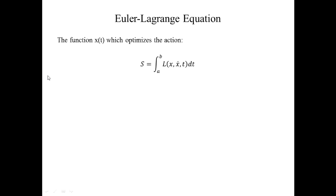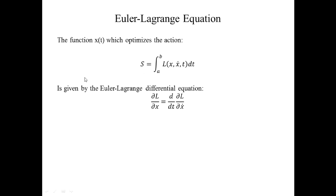Now I'm guessing those listening to this video already have an idea of the Euler-Lagrange equation. In classical mechanics you're often interested in integrating a Lagrangian over time to find something called the action, and especially you're looking for the function x(t) which minimizes the action. The way to find that equation x(t) is by using the Euler-Lagrange differential equation.